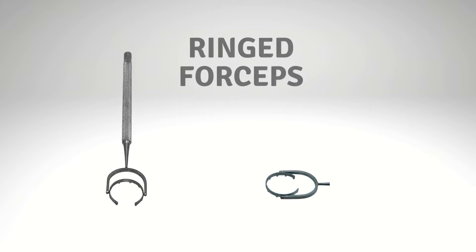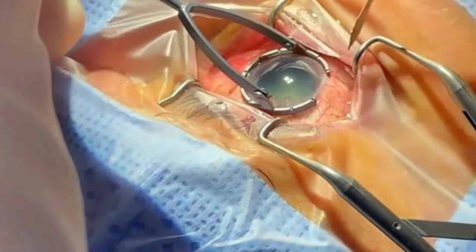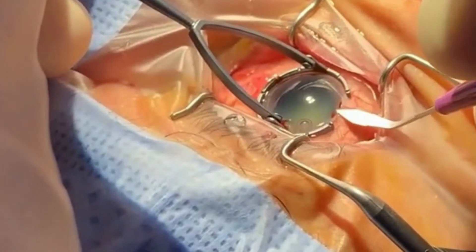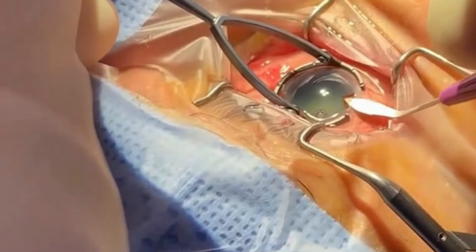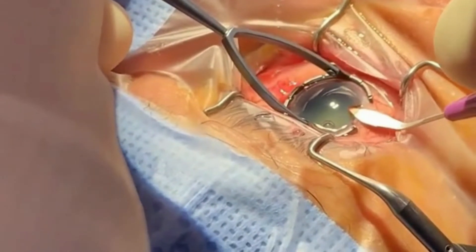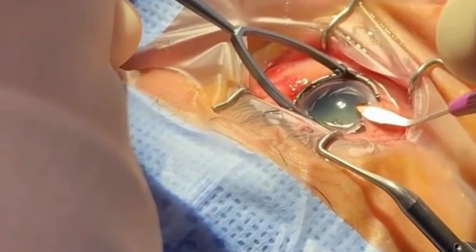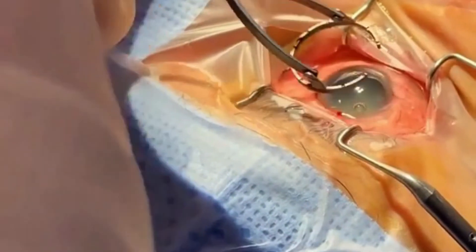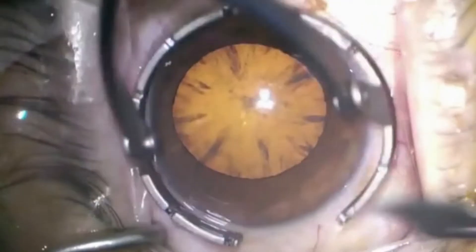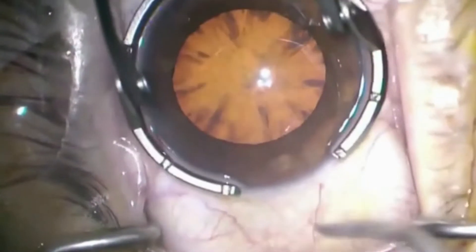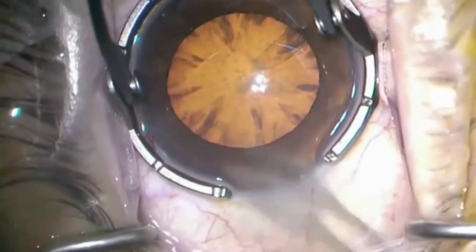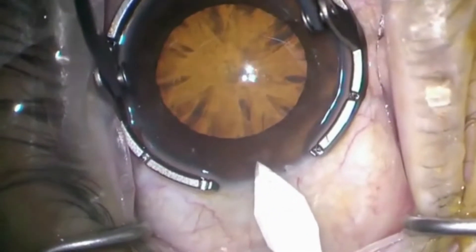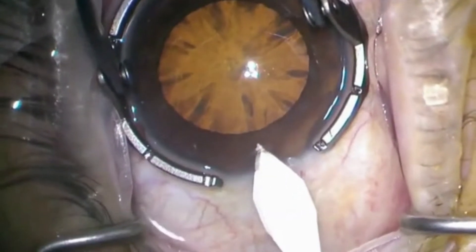Newer ring-shaped globe fixation forceps offer certain advantages over conventional forceps. Hoffman-Thornton globe fixation ophthalmic forceps have a ring that holds the globe in position by providing a larger surface area of contact. These forceps have the advantage of not tearing or biting the conjunctiva or perilembal tissue, so the eyes do not have redness after surgery — an important issue in modern cataract surgery practice. Moreover, the longer handle allows an unobstructed corneal view, making these the preferred forceps for making the primary incision in topical phacoemulsification.